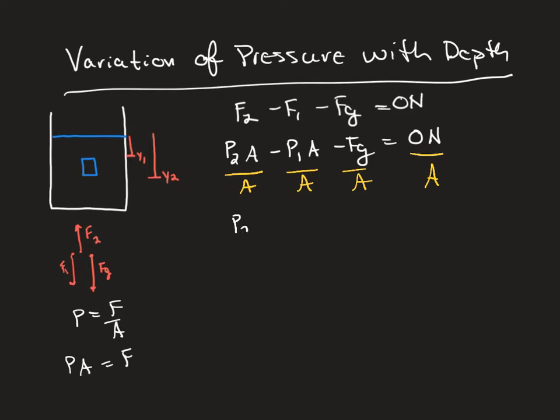So that's going to give me P2 minus P1, and I can't divide out the area here, and anything 0 divided by area is still 0.